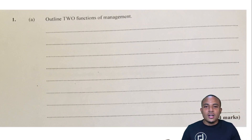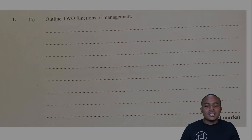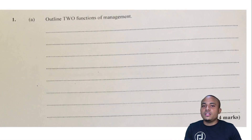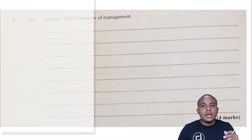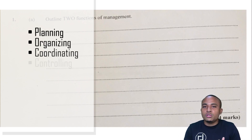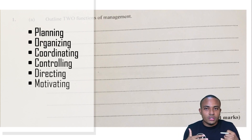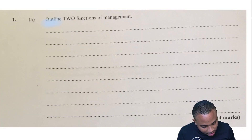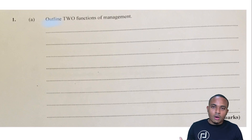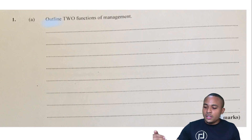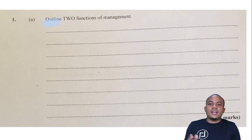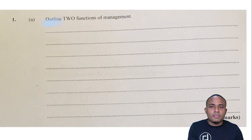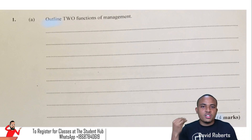Let us start off with question one: outline two functions of management. The functions of management come straight from the syllabus. They include planning, organizing, coordinating, controlling, directing, and motivating workers. They ask for us to outline two functions and it is for four marks. So to outline for four marks, you have to state the function of management and then give a little detail about what the function of management is.